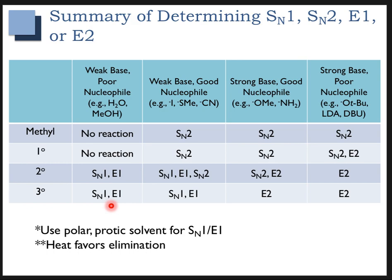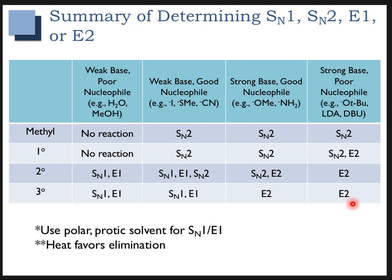Tertiary substrates with weaker bases and poorer nucleophiles can give SN1 or E1 depending on temperature. If you have something that's a decent nucleophile but not a very good base, you might see SN1 or E1 depending on temperature. Anytime you have a strong base and a tertiary substrate, you'll end up with E2 primarily.